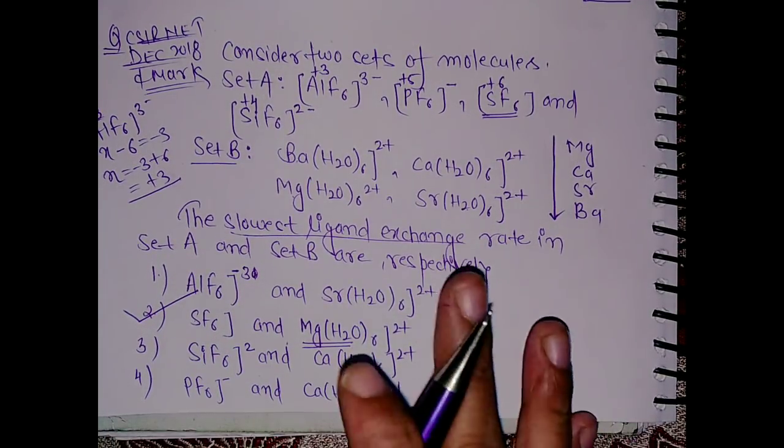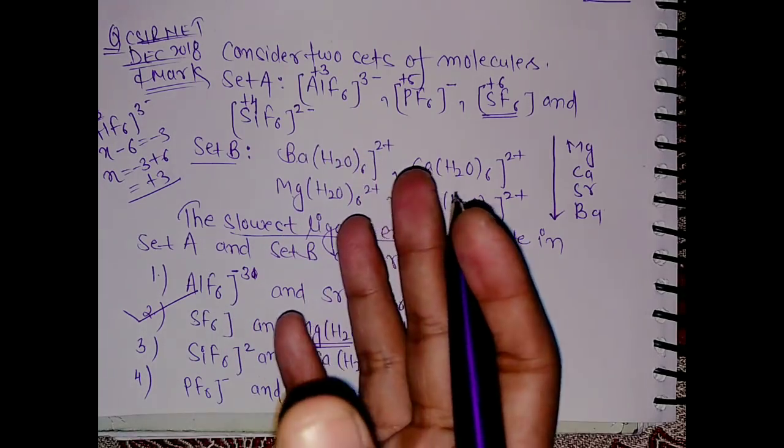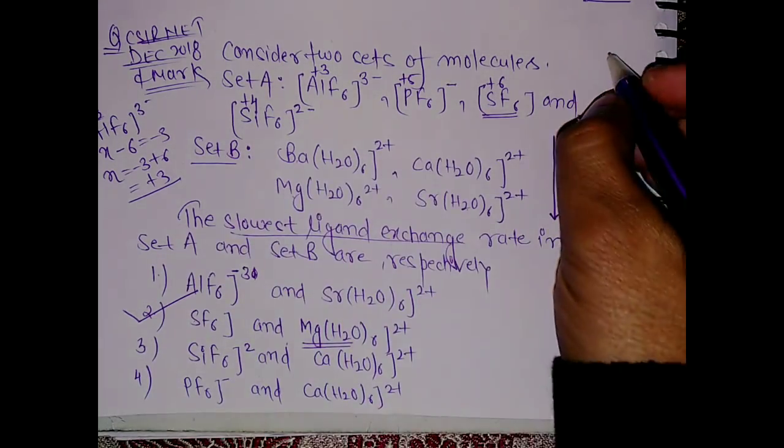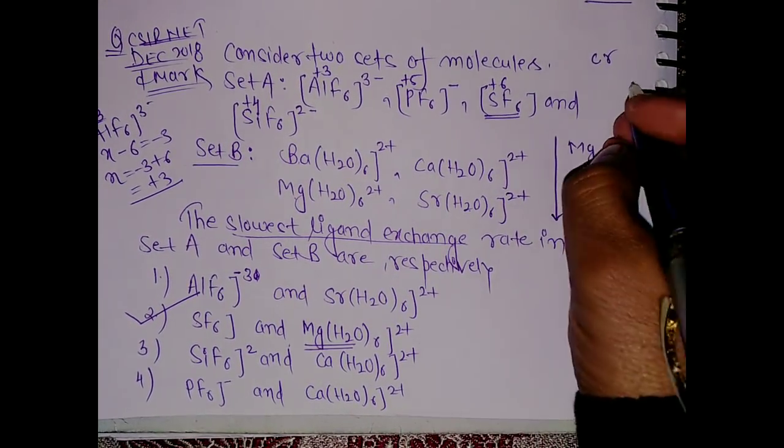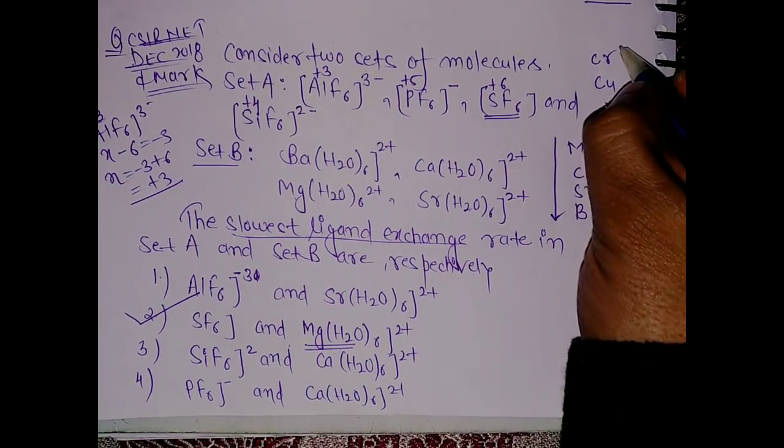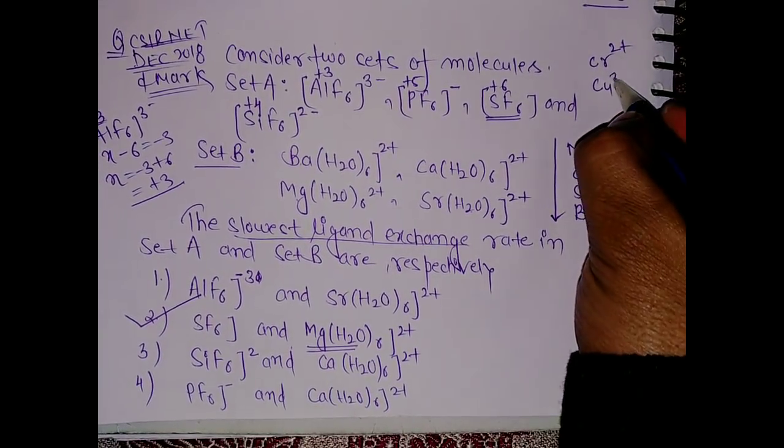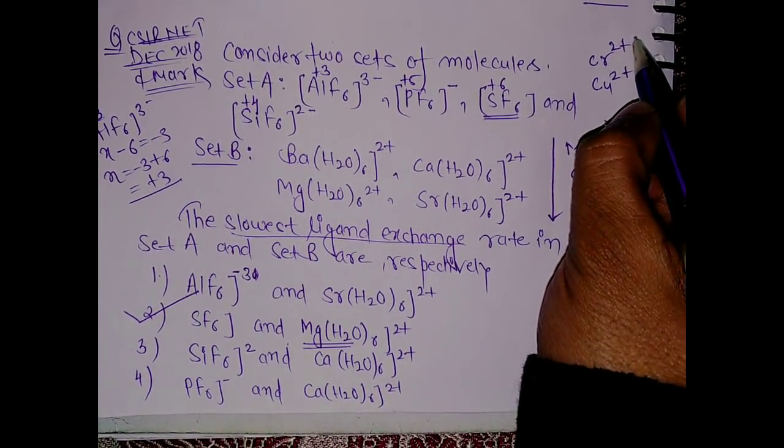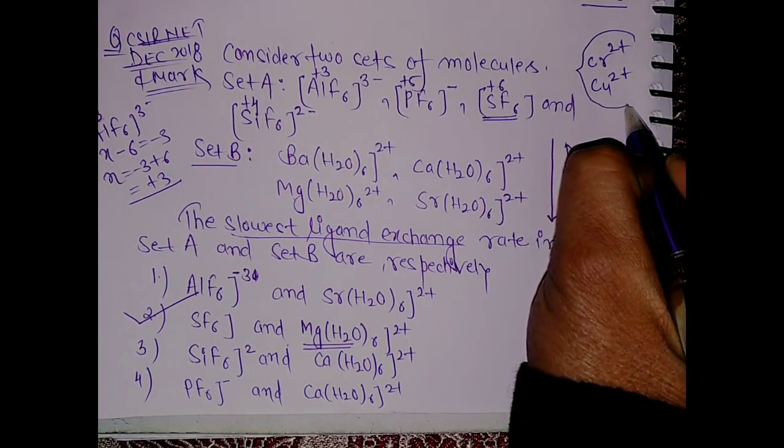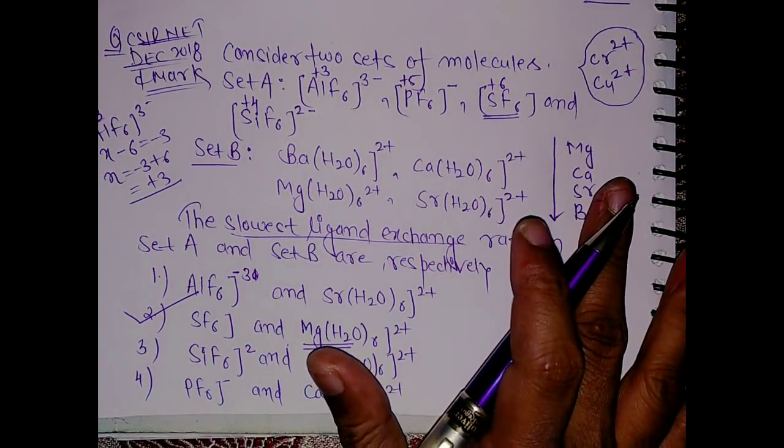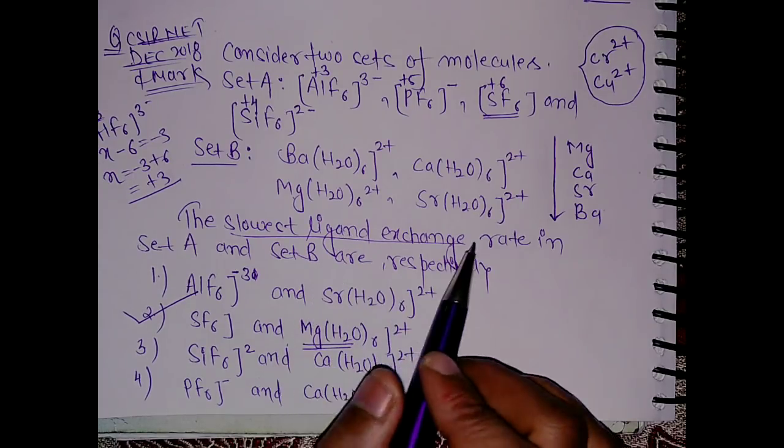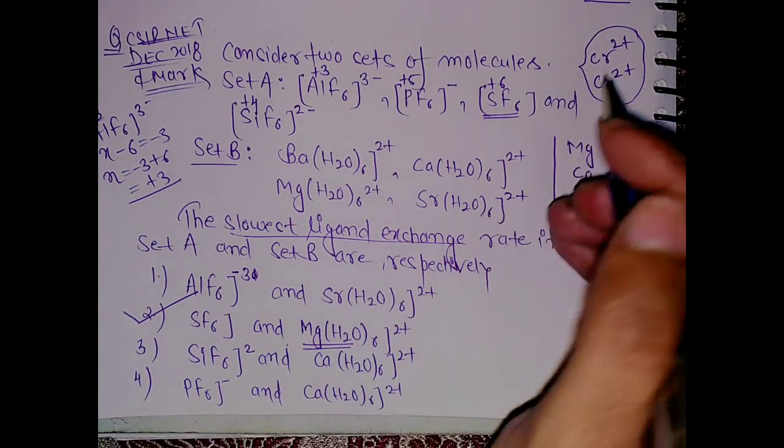These types of questions generally come. Let's say you know we can have a chromium complex and copper complex, these chromium 2+ and copper 2+.